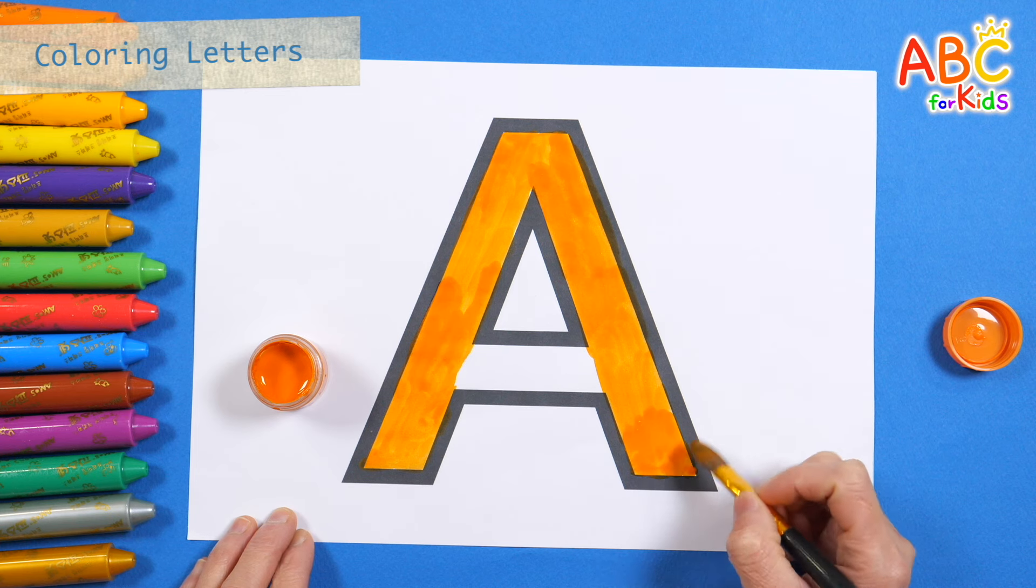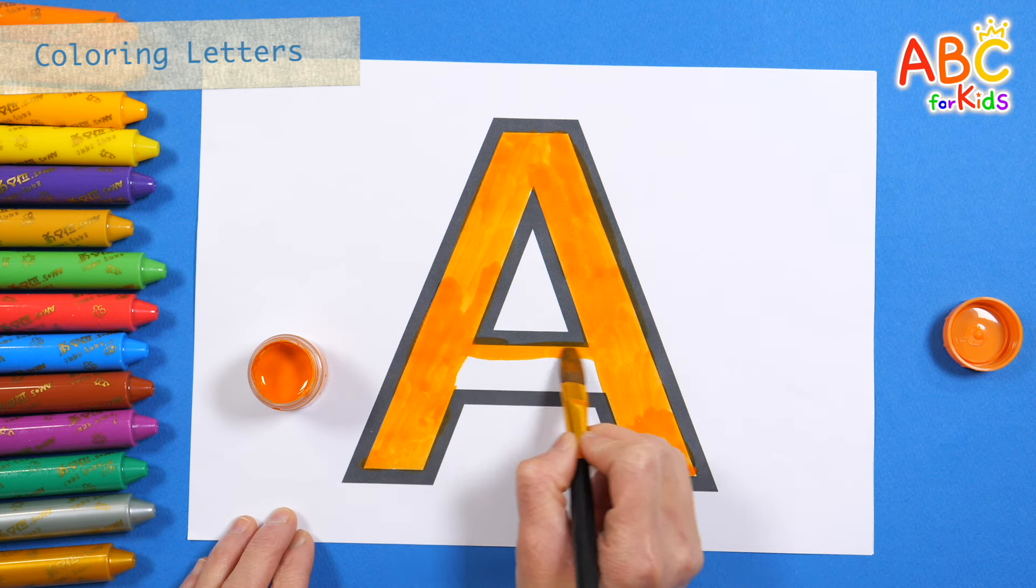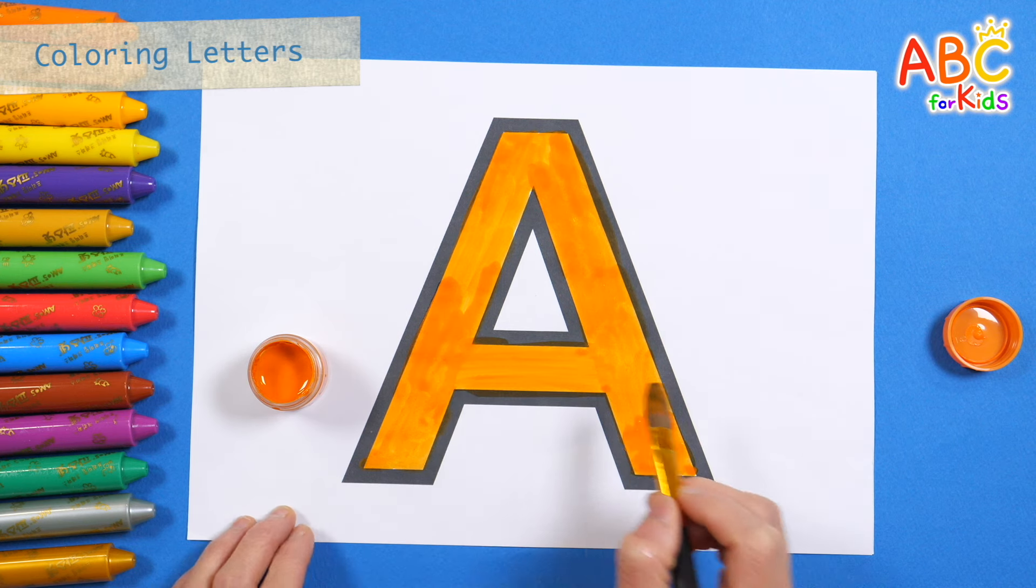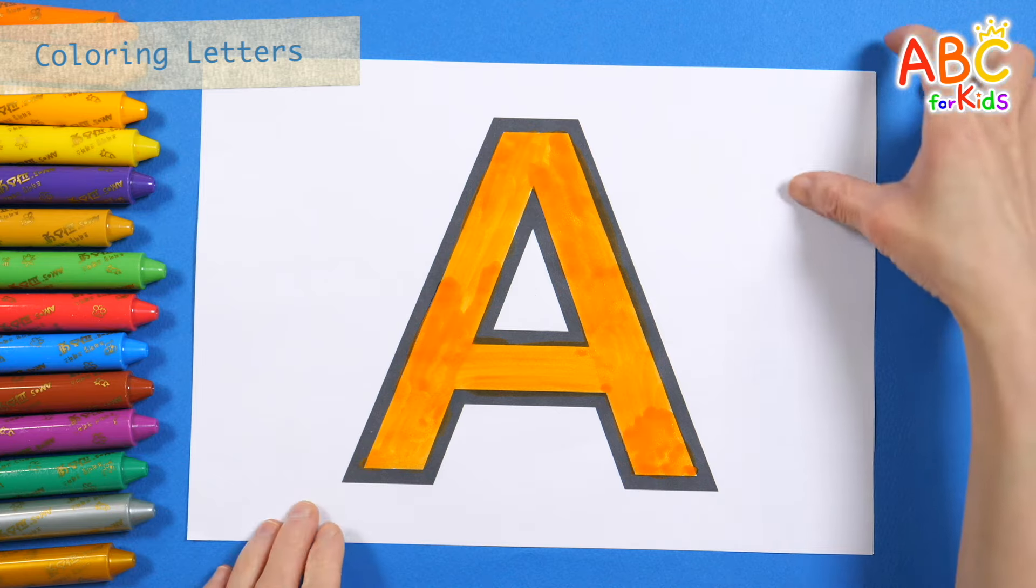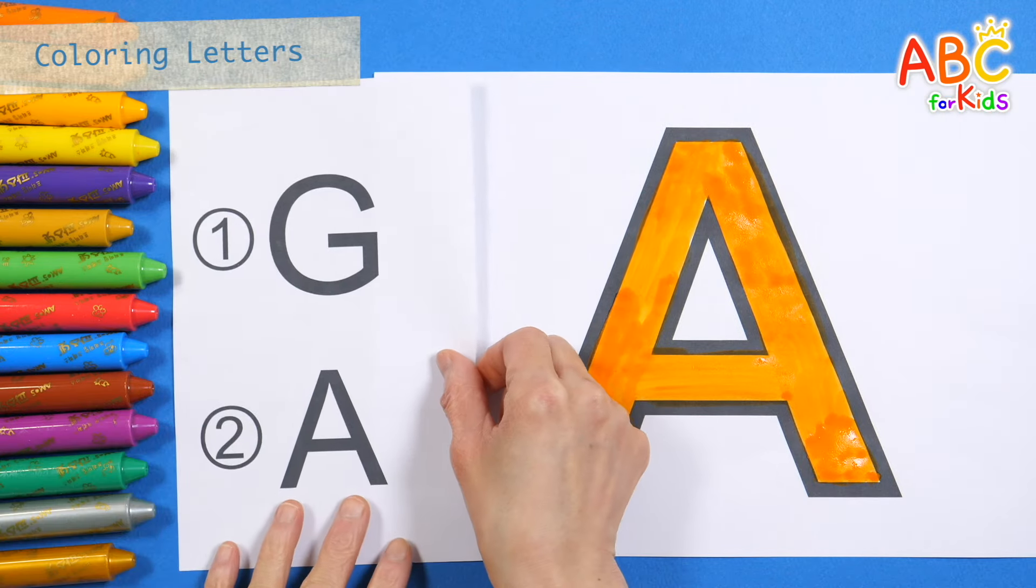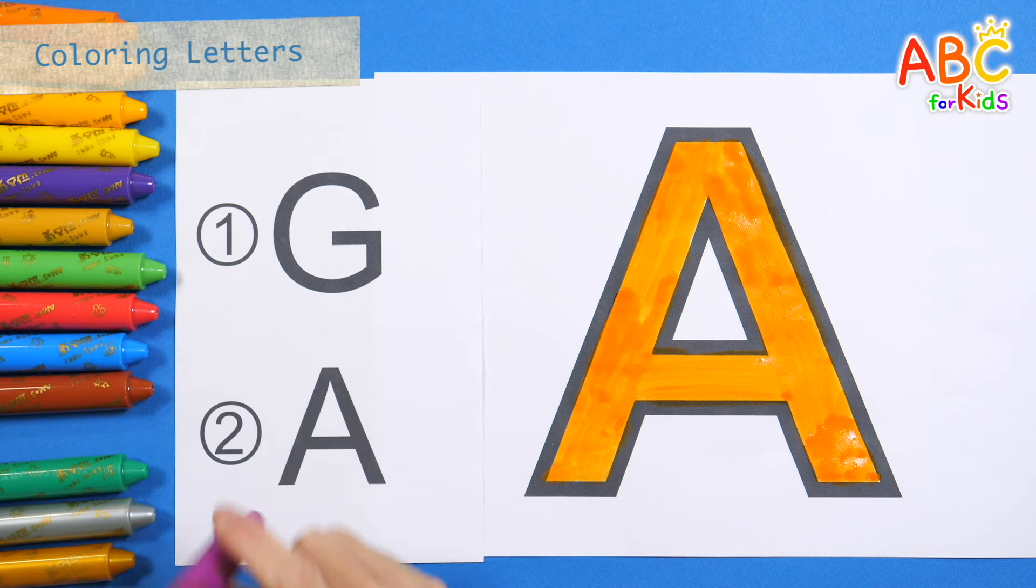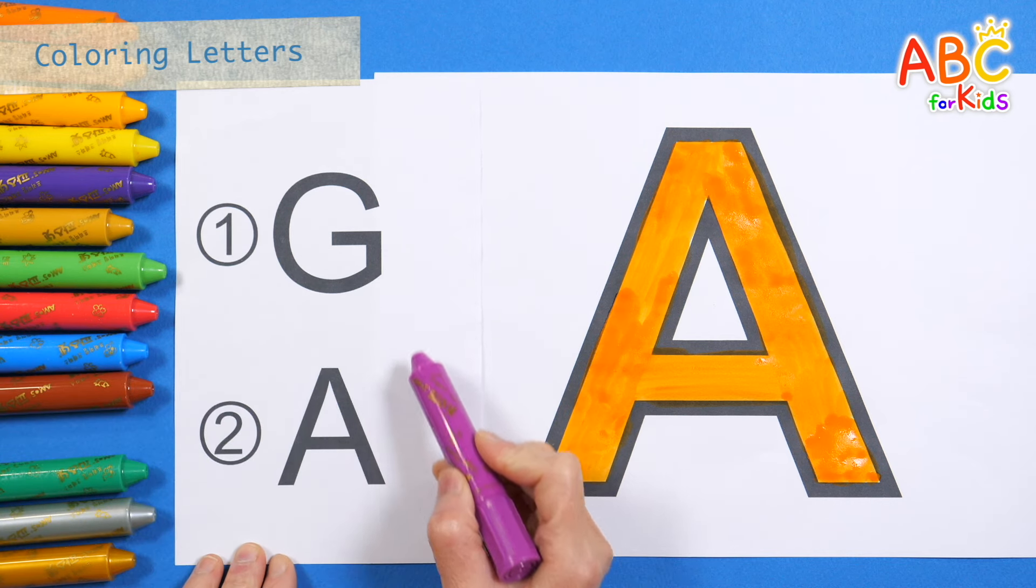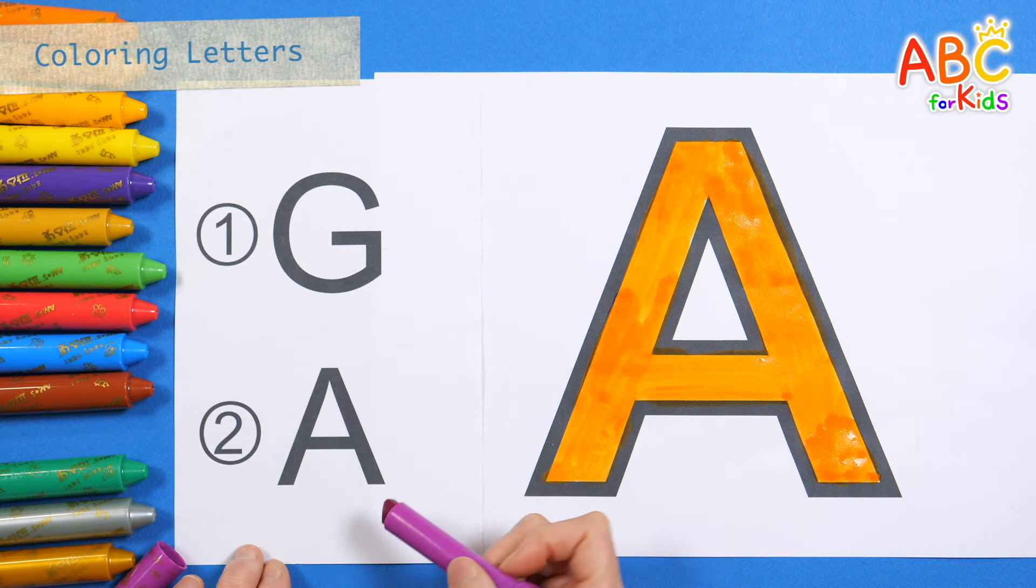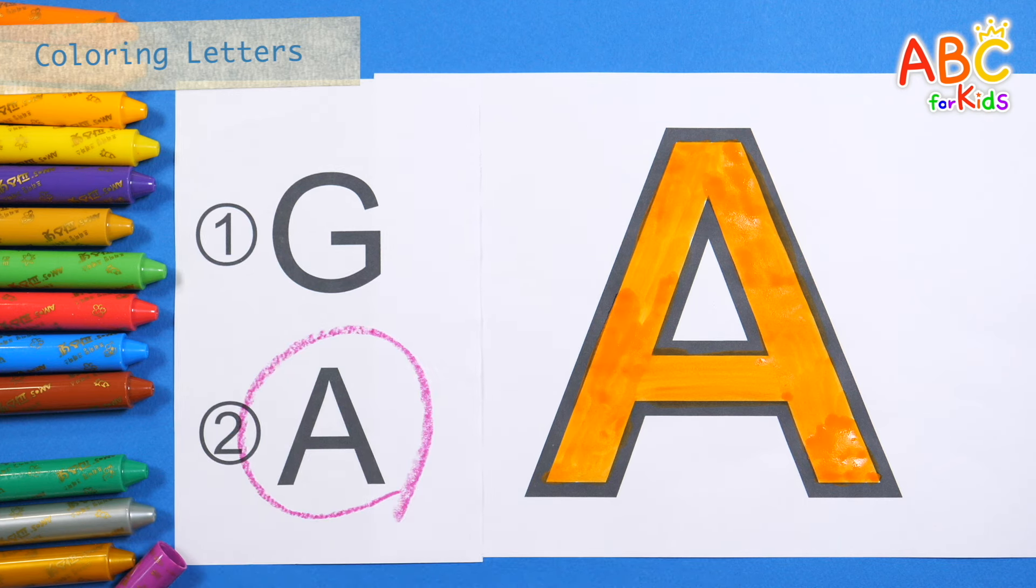Old MacDonald had a farm, E-I-E-I-O, and on his farm he had a cat. This time, let's find A among the letters on the left and circle it. Old MacDonald had a farm, E-I-E-I-O. That's right! A.